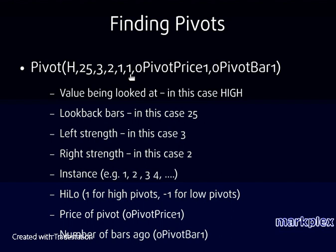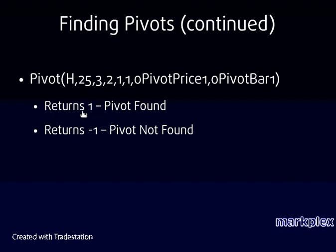The next parameter specifies whether we're looking for high pivots — set to 1 — or low pivots — set to minus 1. A low pivot looks like a V, and a high pivot looks like an inverted V. The final two parameters are actually the values returned by the function: O pivot price 1 is the value of the pivot, and O pivot bar 1 is the number of bars ago that the pivot occurred. With a right strength of 2, the minimum that could be is 2 bars. The function returns 1 for pivot found and minus 1 for pivot not found.